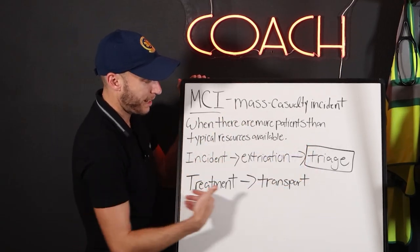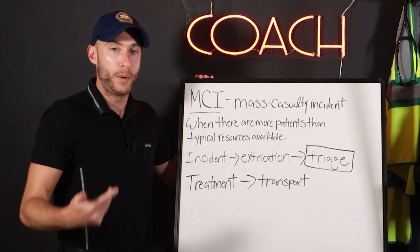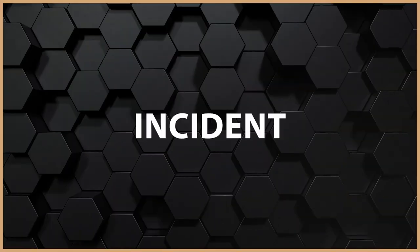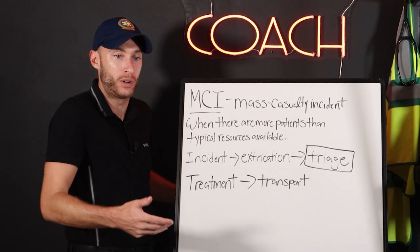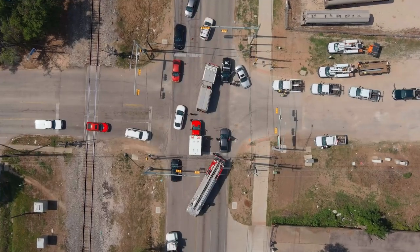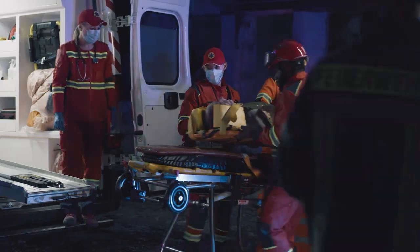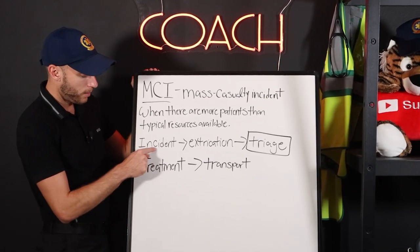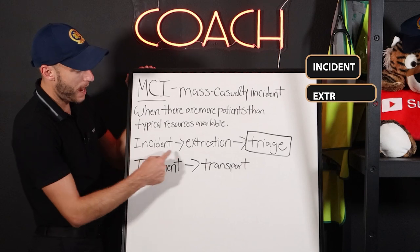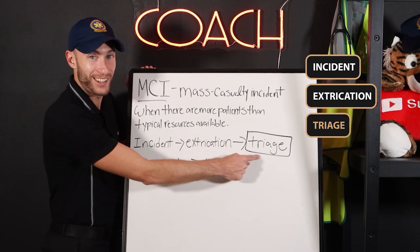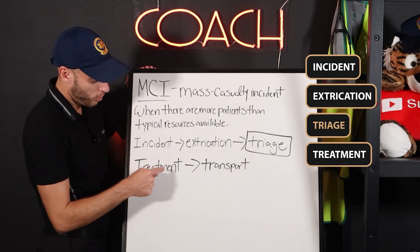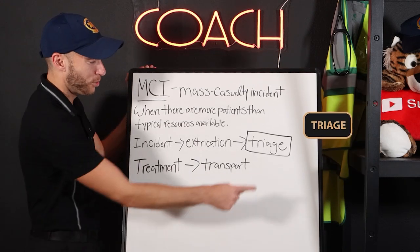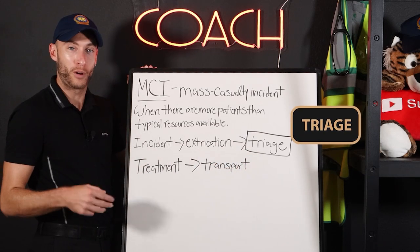This is what an MCI kind of looks like, so you understand where we're going to be doing this mass amount of triage with so many patients. We have the incident — where the actual event is taking place — it could be a large car accident, a fire, or something industrial. I'm going to take you on a patient journey. We have to extricate the patient, then triage that patient, then treat that patient, and then transport that patient. Depending on our triage, we determine what happens in treatment and transport.